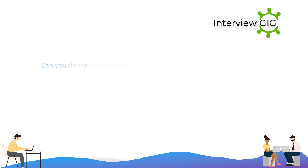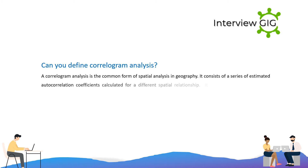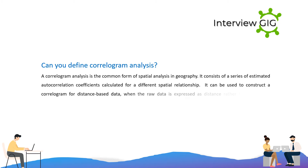Can you define correlogram analysis? A correlogram analysis is a common form of spatial analysis in geography. It consists of a series of estimated autocorrelation coefficients calculated for different spatial relationships. It can be used to construct a correlogram for distance-based data, when the raw data is expressed as distance rather than values at individual points.